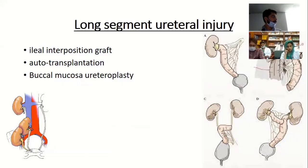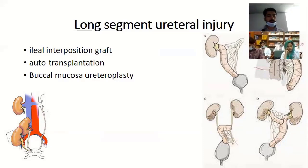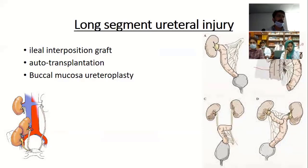Recently a video was shared on a WhatsApp group of buccal mucosal urethroplasty being performed laparoscopically, and two cases have been performed at our institute. For long ureteric strictures where end-to-end anastomosis is not possible, a longitudinal incision is made in the back of the graft and an omental wrap is done to provide blood supply, because a vascular bed is necessary when putting a graft in the back.